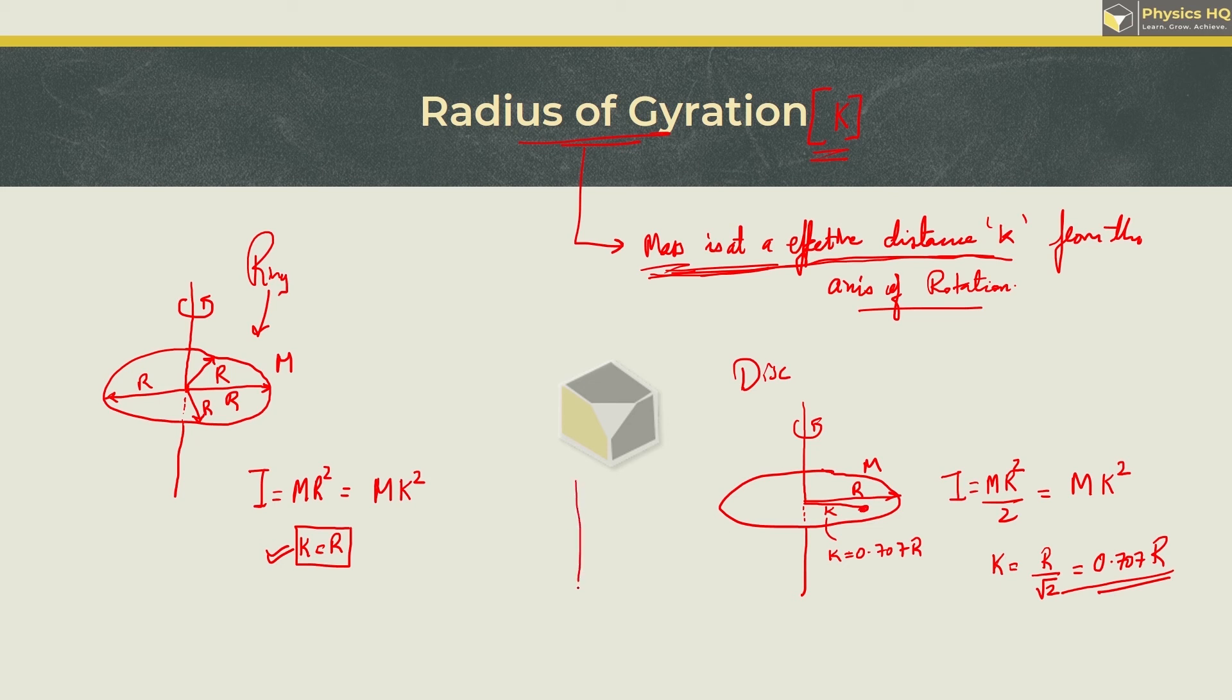So let me draw an equivalent diagram over here. So we got the entire mass of the disc represented as point mass and this is at a distance of k from the axis of rotation. So this is what radius of gyration means - the overall mass of the disk is effectively at what distance from the axis of rotation.